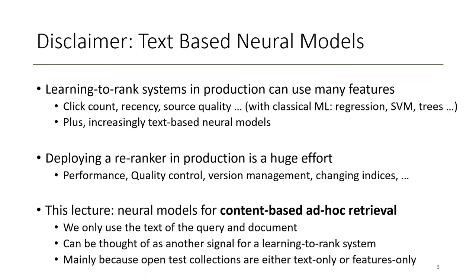Before we start, I think we need to set this lecture in the right context. Today we look at text-based neural models. In learning to rank systems, usually when you run them in production, you can have many different features such as click count, recency, source quality, etc. The learning to rank field that works with classical machine learning techniques such as regression, SVM, or tree-based techniques can use those features as well, and increasingly in production at larger companies these text-based neural models are run alongside those.